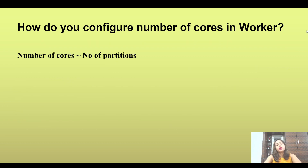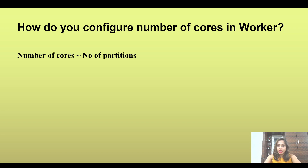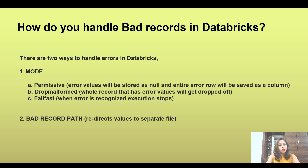The next question is: how will you configure the number of cores in a worker? This is a Spark-oriented question. The number of cores is usually equal to the number of partitions, or maybe one or two cores more than the number of partitions. So if you have five partitions to work on, you can configure five cores — it's simple. You can always keep one or two extra cores available.